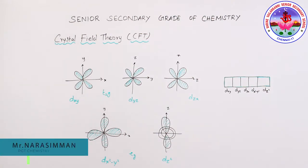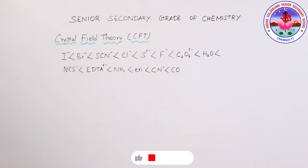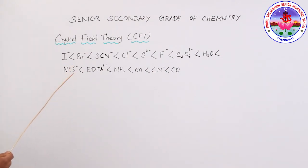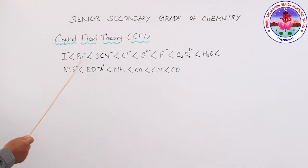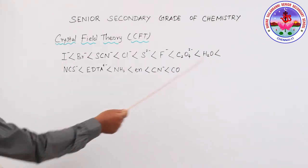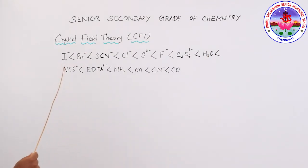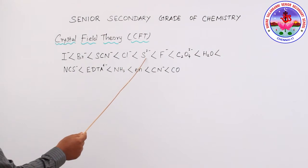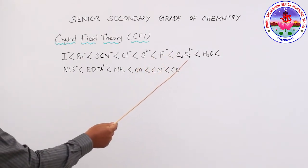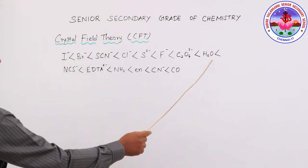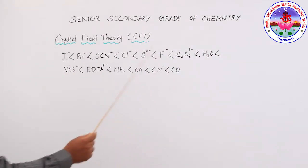Now, the ligands which cause greater crystal field splitting are termed strong ligands, while those which cause lesser crystal field splitting are weak ligands. This increasing order of field strength is called the spectrochemical series. Up to H₂O these are weak field ligands, and from there onwards they are strong field ligands. The order is: I⁻ < Br⁻ < SCN⁻ < Cl⁻ < S²⁻ < F⁻ < oxalate²⁻ < H₂O.